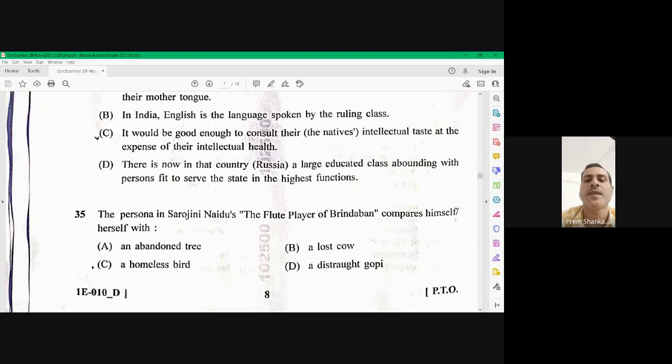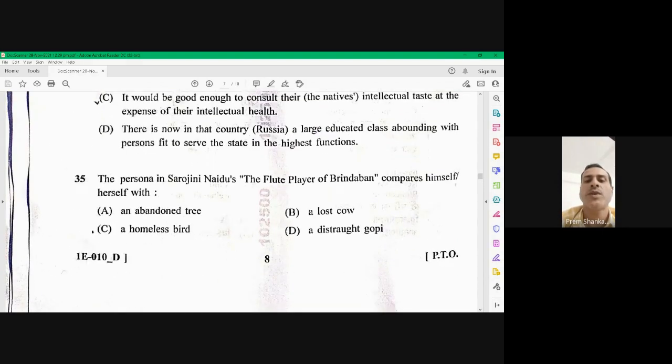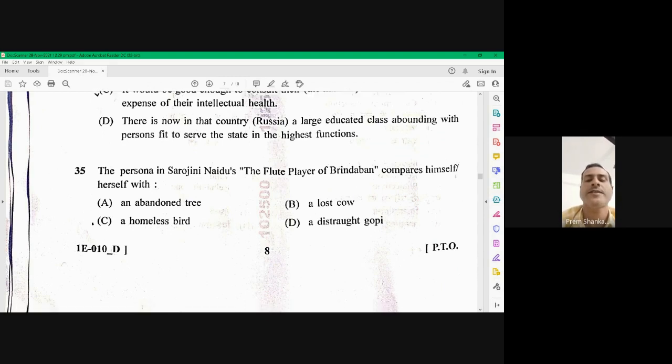Question number 35, the persona in Sarujani Nayadu, the flute player of Brenda 1 compares himself or herself with. Here the right option is a homeless bird. Question number 35 is homeless bird.